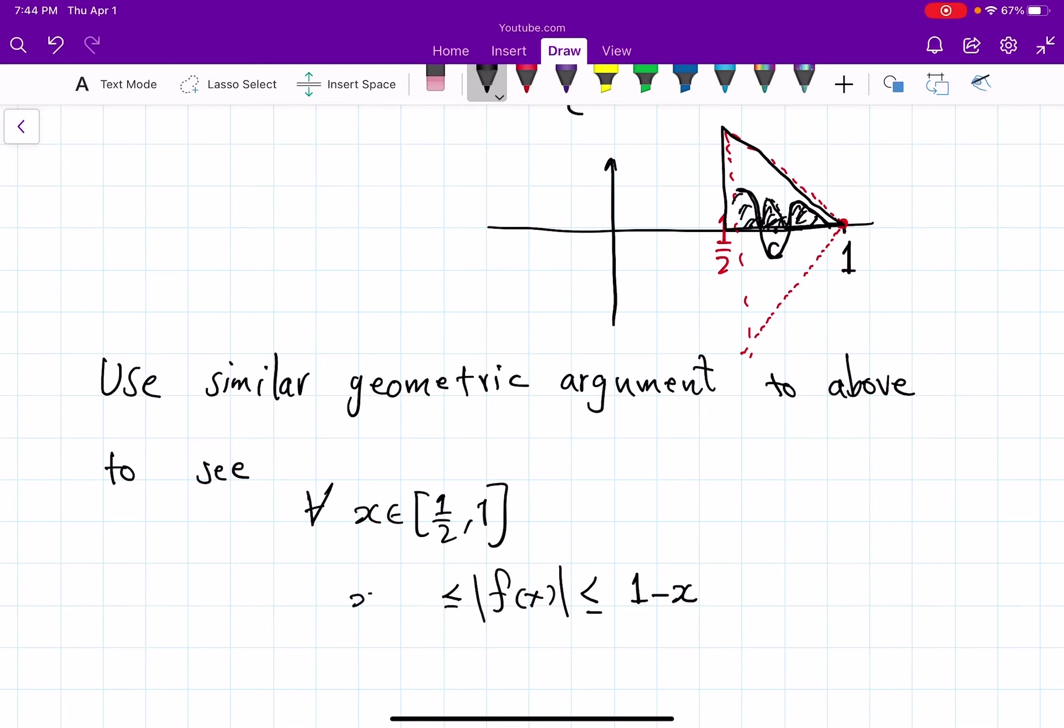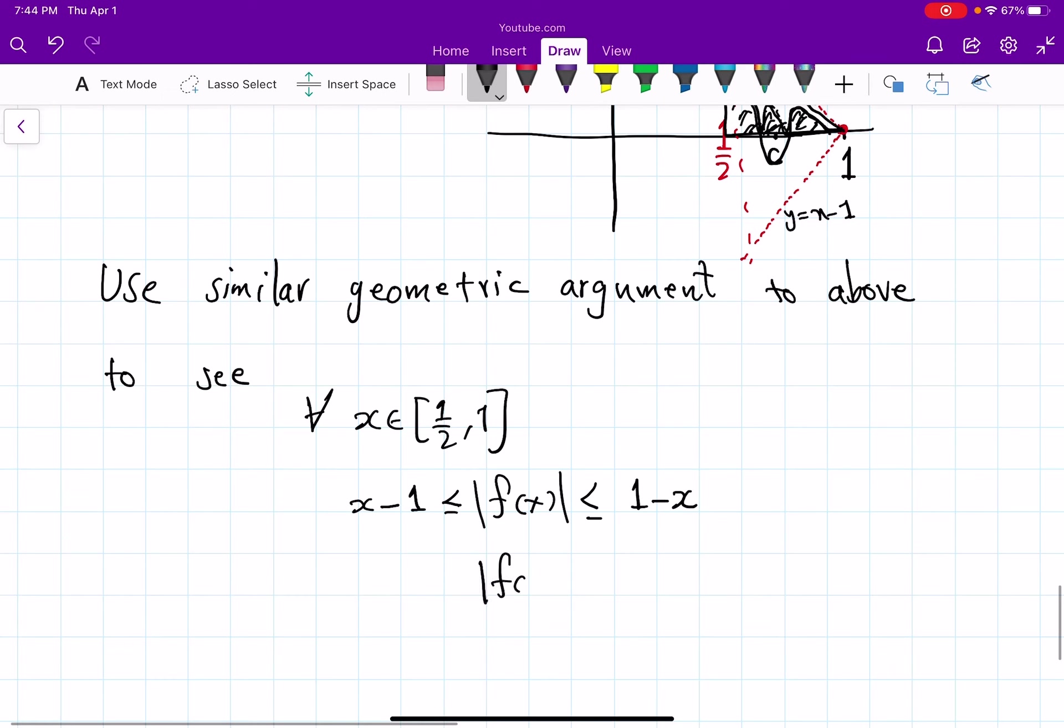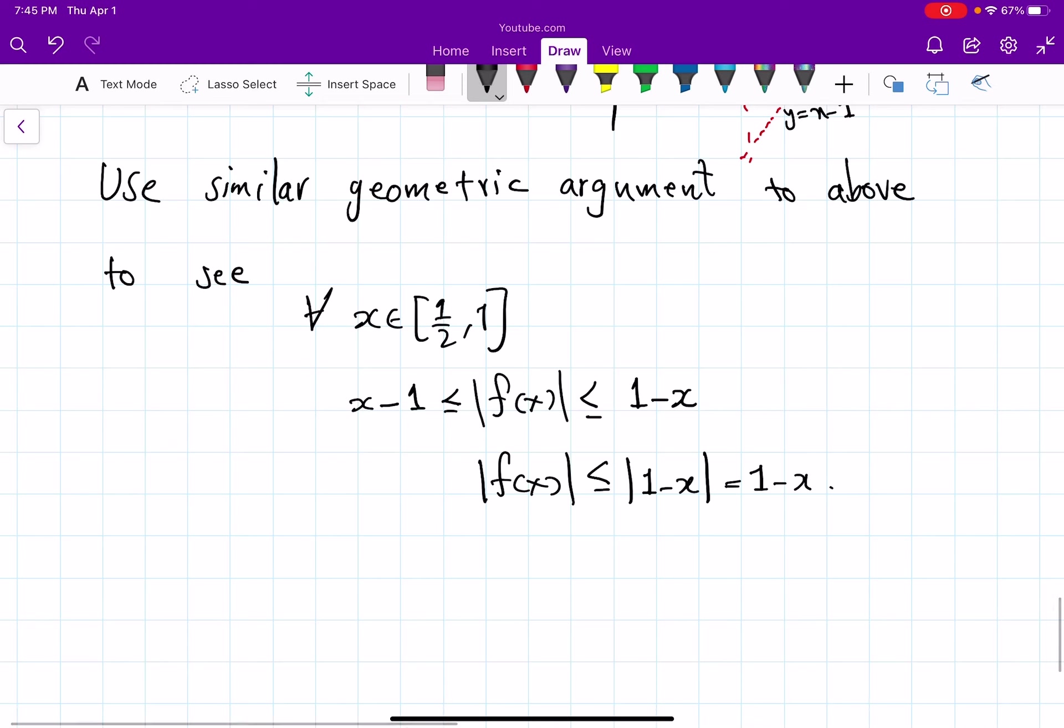to above to see that first of all for every x between one half and one, f(x) is bounded by these functions. So here these will be, so you want to hit zero at one and your slope is negative one, so 1 minus x. And here you want to put x minus 1. Okay, okay, so this is y equal x minus one. So this will be |f(x)| less than or equal to absolute value, because these two sides are negatives of one another, so 1 minus x which is positive.